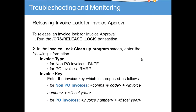The next one is releasing the invoice log for invoice approval. To release an invoice log for invoice approval, run this T-code. In the invoice log cleanup program screen, enter the following type: for non-PO invoices you put BKPO, and for PO invoices RMRP.